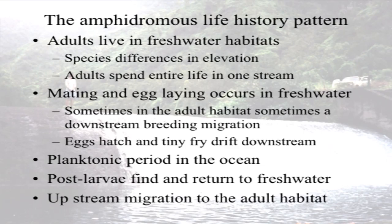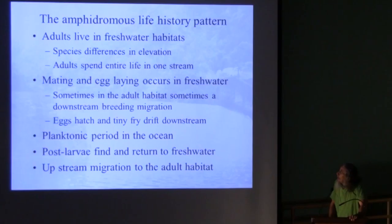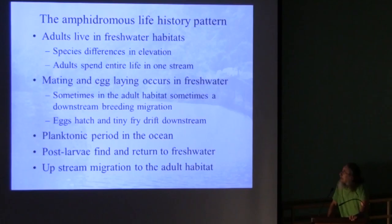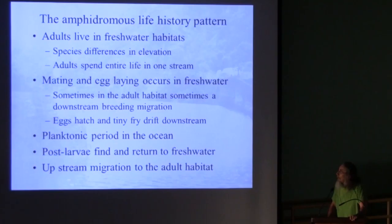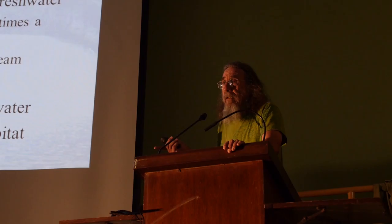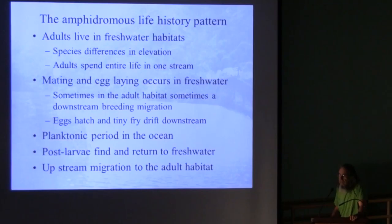All of these creatures share the same life history pattern, and the term for it is amphidromous. Adults live in fresh water — with some differences in elevation, but adults spend their entire life in a stream. They don't leave to go find a better stream; they may get washed out in a big flood, and they might survive for a couple of days in seawater, but essentially once a fish, snail, or shrimp is in a stream, they're there for life unless you catch it. Egg-laying occurs in a freshwater habitat; there's a downstream breeding migration that does occur, but probably more commonly the eggs are laid in the adult habitat.